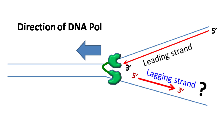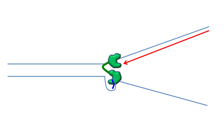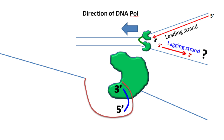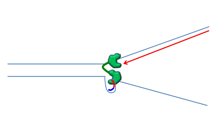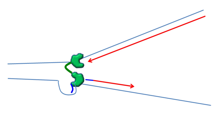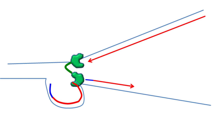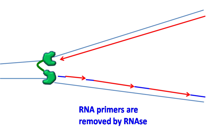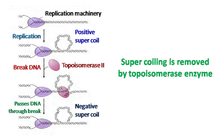For lagging strand synthesis, in the first step primase forms a primer, which is extended in the 5' to 3' direction by the formation of a loop. As the polymerase moves forward, the loop is released. RNA primase again forms a primer, which is again extended in the form of a loop. Finally, when the RNA primers are degraded by RNase enzyme, it results in the formation of short fragments known as Okazaki fragments. Also during elongation, as the helicase continuously unwinds the DNA, there is positive supercoiling, which is removed by DNA topoisomerase enzyme.